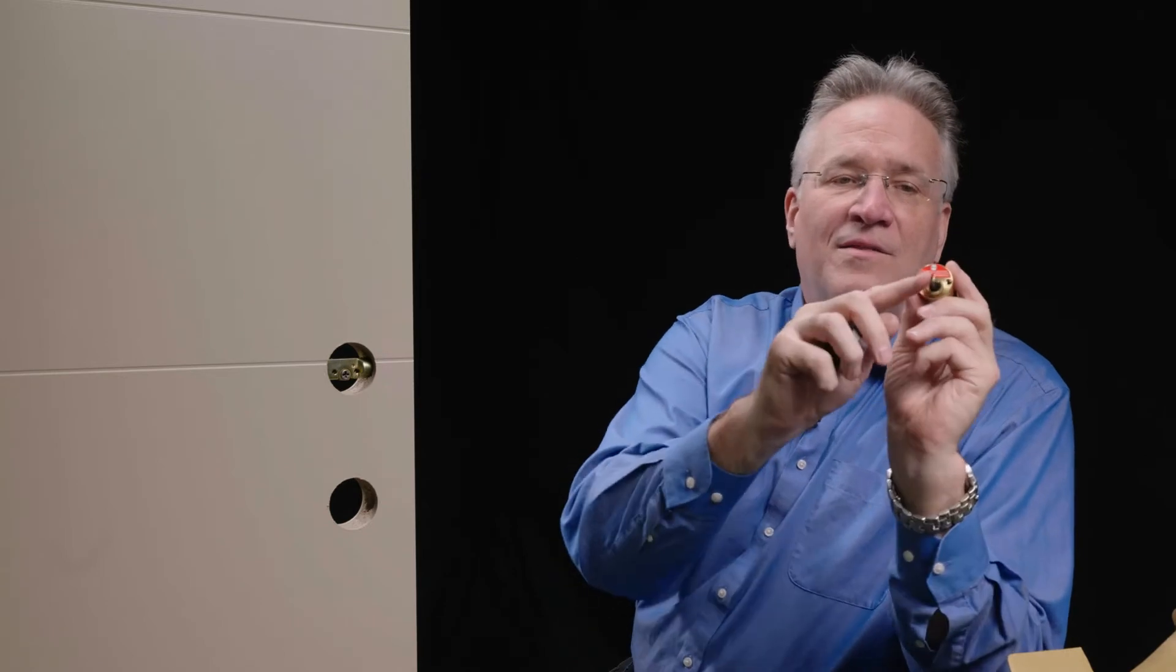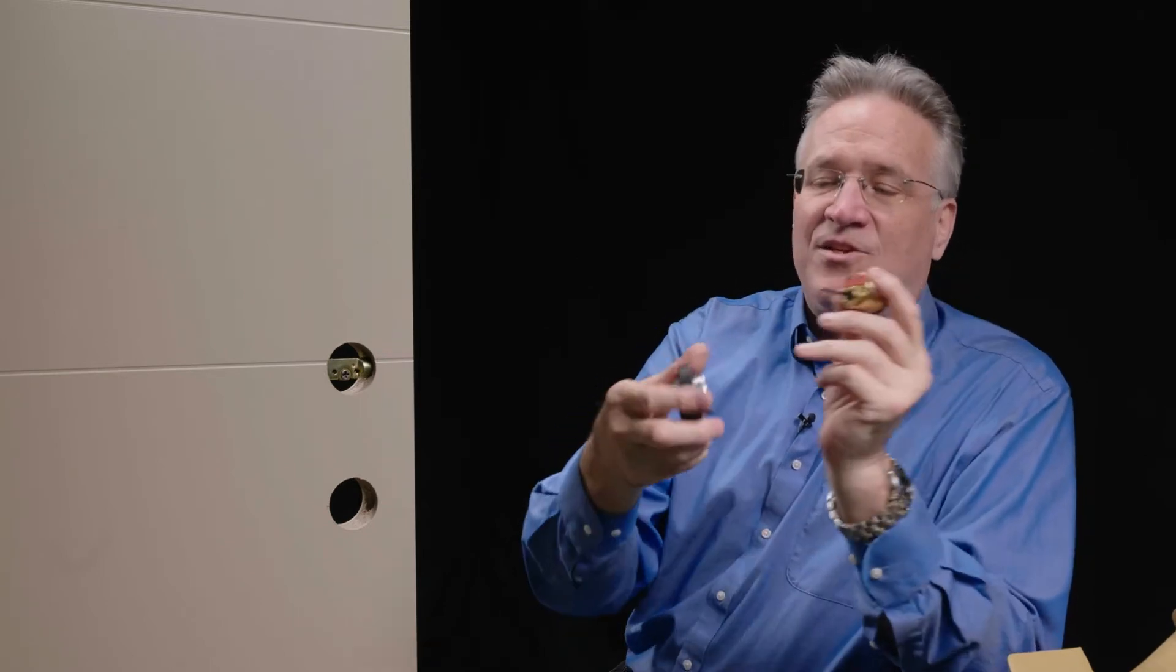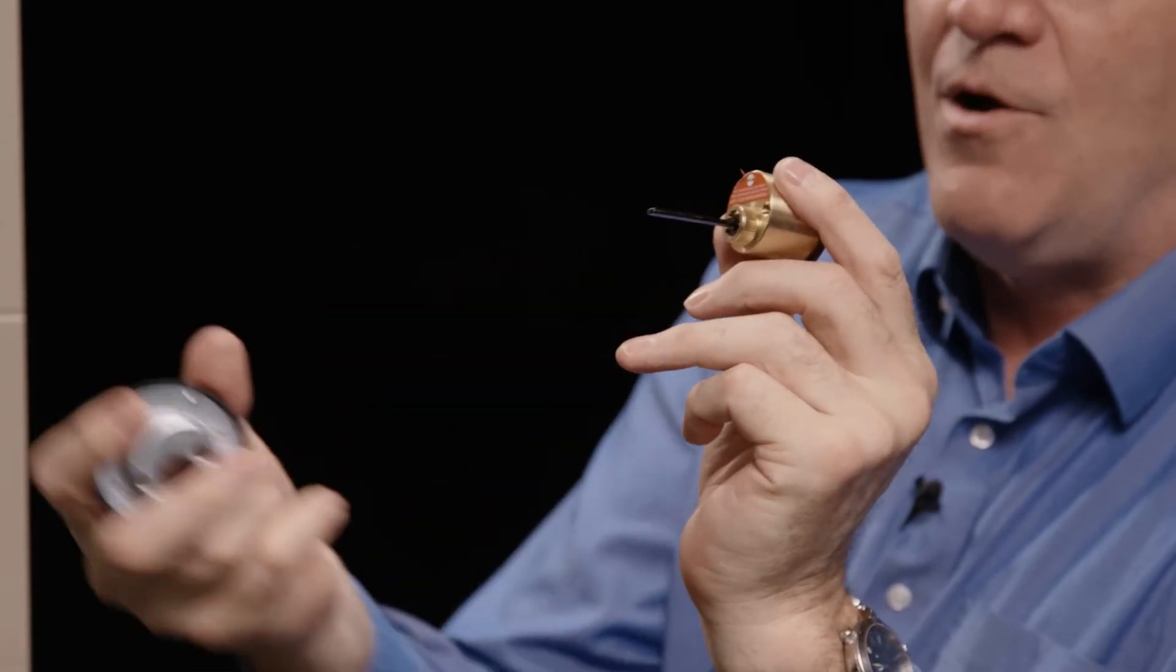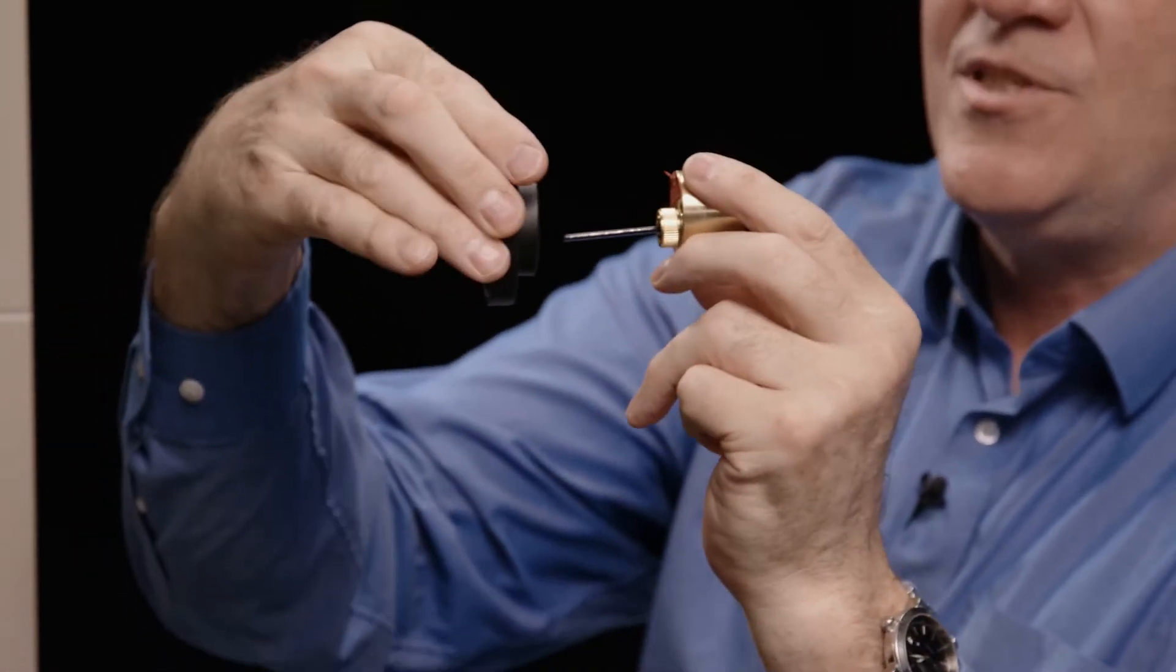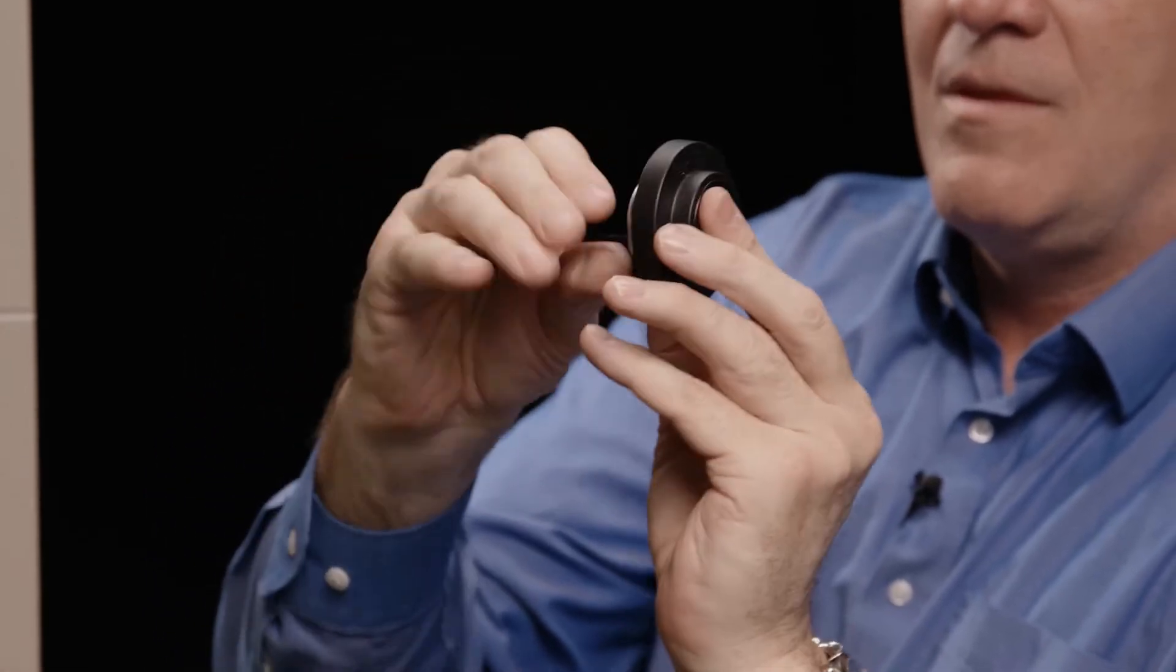Now we're going to start on the outside mechanism for the door. This is the cylinder and the tailpiece needs to be held horizontal and needs to go through the large hole on the trim, just like so. There we go.